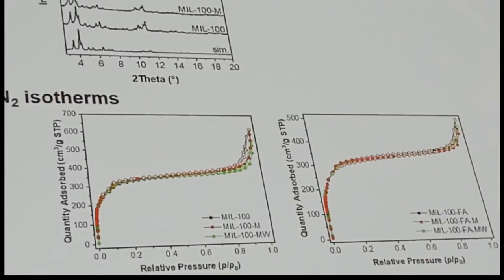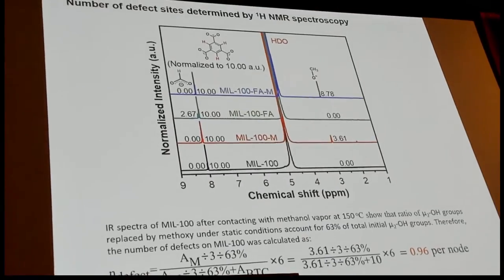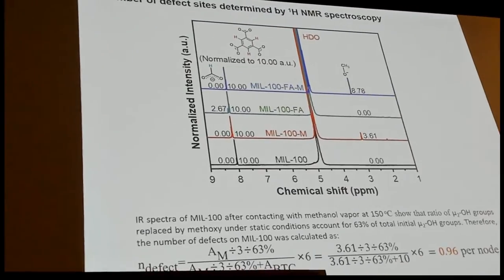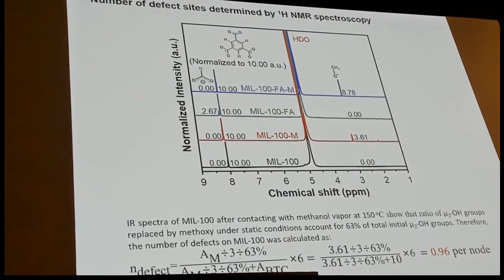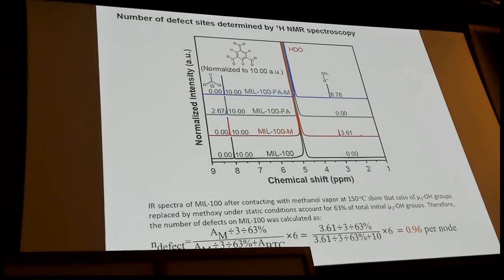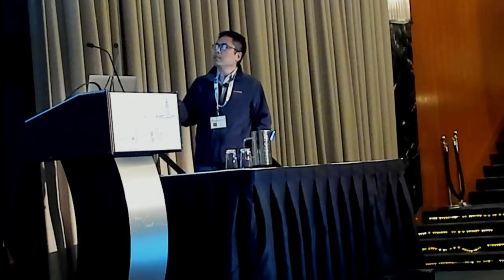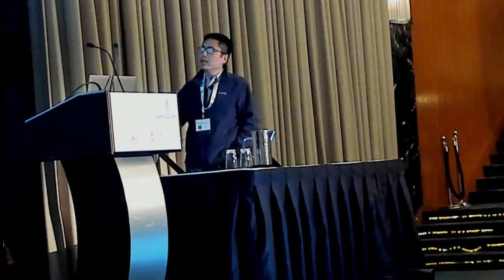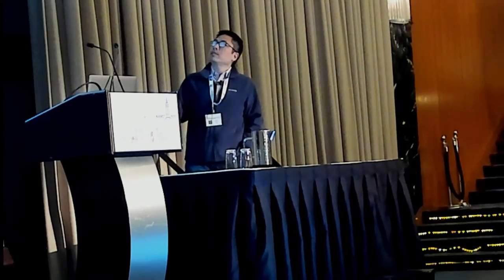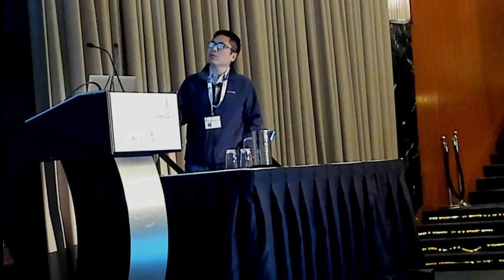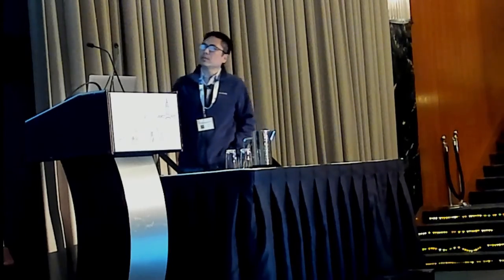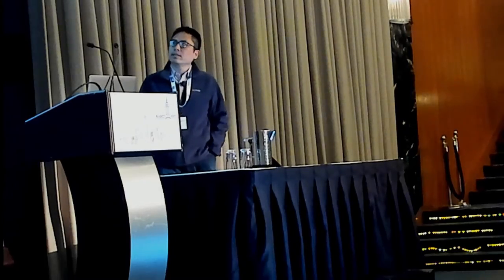The MOF is stable after all the treatment and catalysis. We also want to know the number of defects, since catalysis is about the number of sites. We used ¹H NMR to quantify the defect density. From the data, we calculate about 0.96 defects per node — approximately 1 per node. This is pretty high compared to aluminum-based MIL-100, which has only 0.1 per node. The turnover number of the sample is 2 in 24 hours. These two results together provide strong evidence that this is a bimolecular reaction requiring two methoxy groups bound to the site.